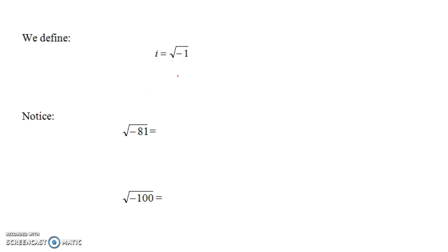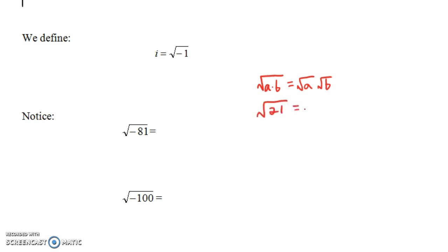Now that we have this definition, what is the square root of negative 81? Let's remember that square roots have this property: the square root of a times b is the same thing as the square root of a times the square root of b. For example, the square root of 21 would be the same as the square root of 3 times the square root of 7, since 21 is 3 times 7.